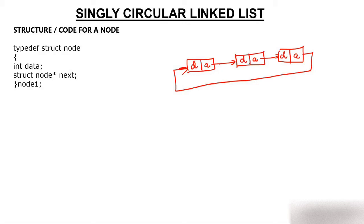My job is to first understand how to create this node. Because of that we have created a structure — a struct — and given it the name 'node'. You can give any name, but node looks more sophisticated as we are creating a node. Inside the structure of a linked list you have two parts. One is data — data could be integer, character, float, anything — but here we have created integer.